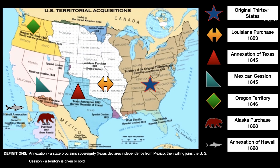This map shows where the land came from after those 13 states. On the east coast you see the original 13 states and territories past the Appalachian Mountains, represented by a brown star with a blue outline. In 1803, the Louisiana Purchase by Thomas Jefferson is shown in the white area in the middle with a blue arrow. The annexation of Texas in 1845 is marked with a blue triangle, and the Mexican Cession is represented by a right-angle triangle in a gold-brown-green color.